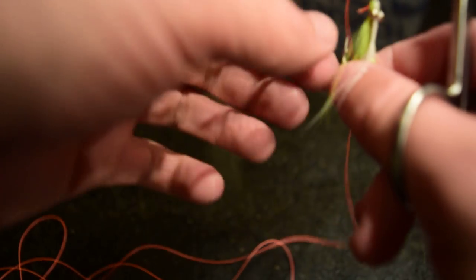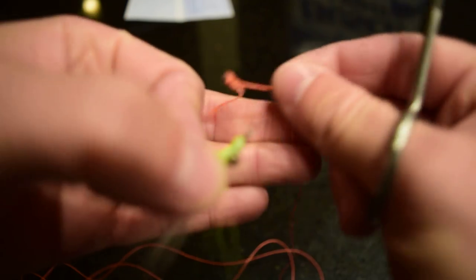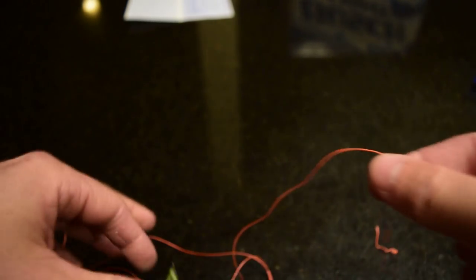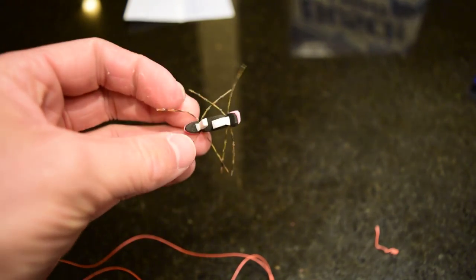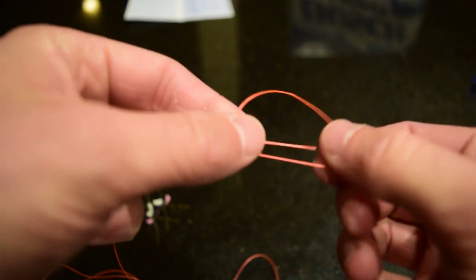I also have a really easy way to tie on droppers using this technique. So say you're fishing like a Chernobyl ant, whatever hopper, whatever you want to put on there as a dropper. It's almost the exact same thing, but we don't have a fly on there. We're just going to make that loop.